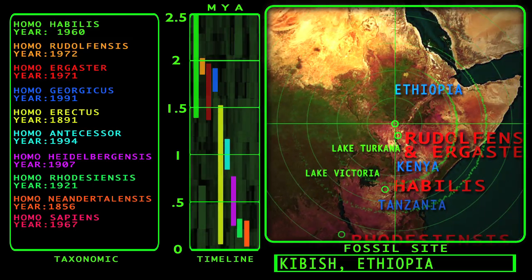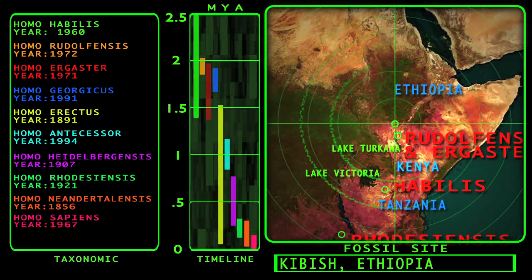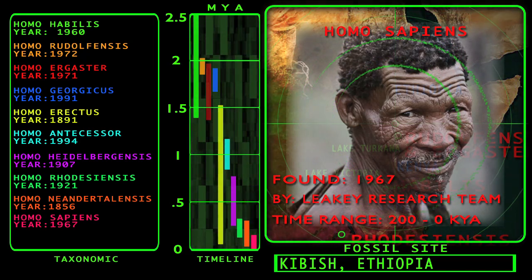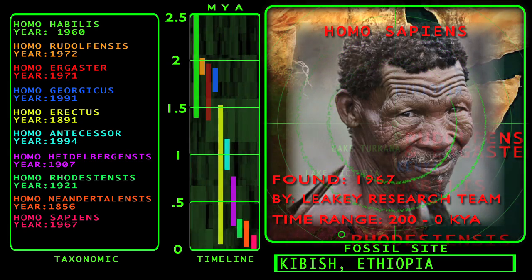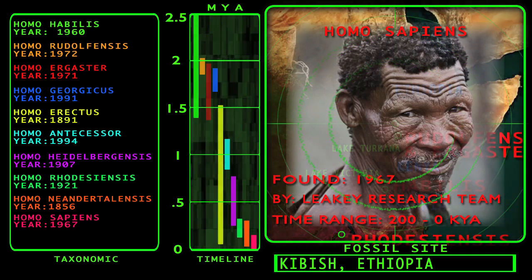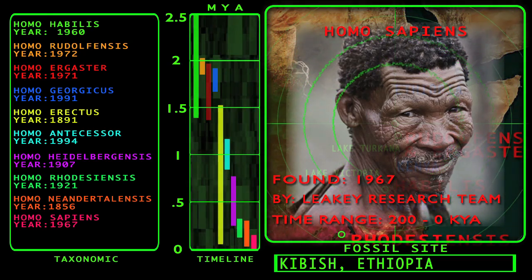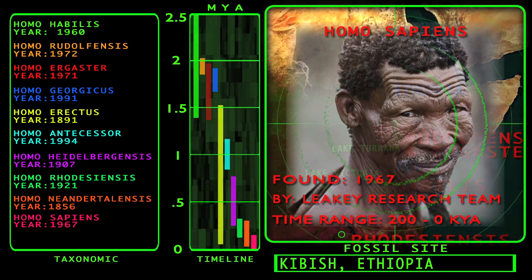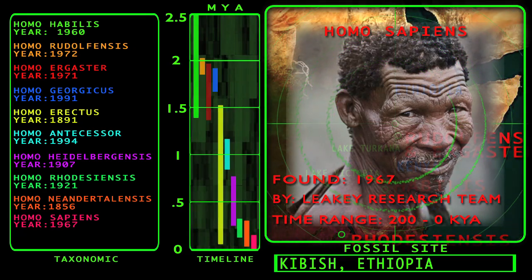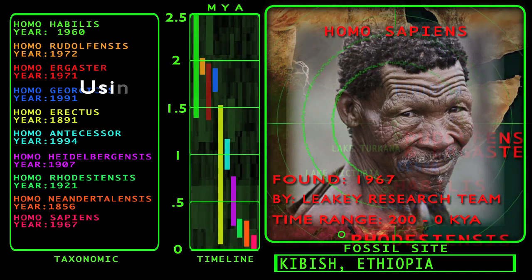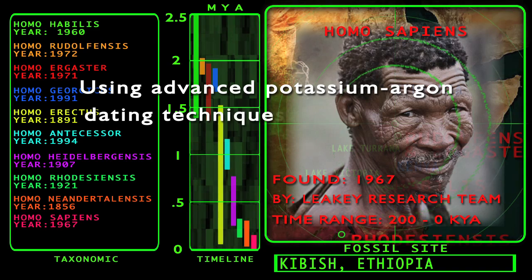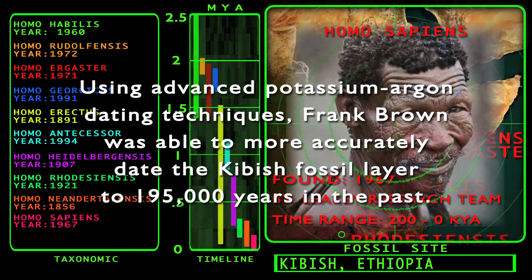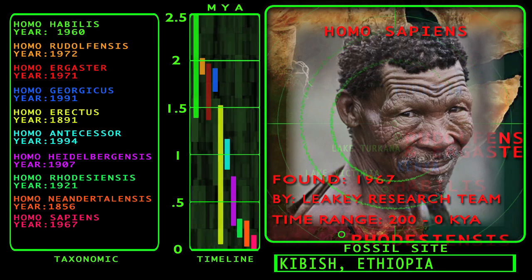Last and still standing on our timeline is our own species, Homo sapiens. The oldest known fossils of Homo sapiens were discovered in 1967 by Richard Leakey and his research team along the Omo River in the Kibish formation in southern Ethiopia, approximately 100 miles north of the Koobi Fora fossil site. The fossils were initially dated to 130,000 years in the past, but from 1999 to 2003, geologist Frank Brown of the University of Utah used advanced potassium-argon dating techniques to more accurately date the Kibish fossil layer to 195,000 years in the past. The time range of Homo sapiens is around 200,000 years ago to the present.